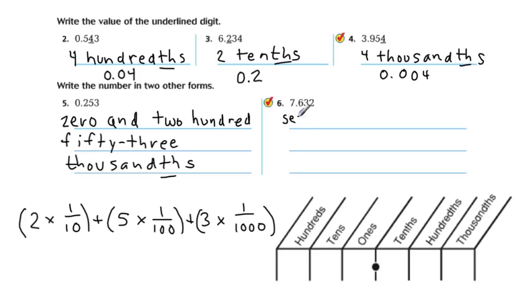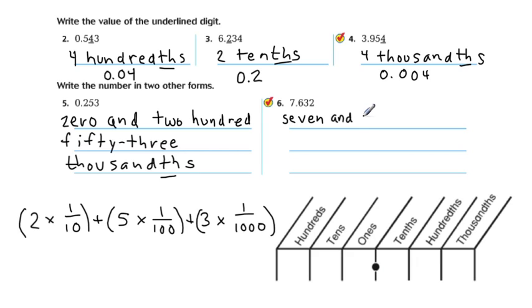Then the word 'and,' because that's what the decimal says. And then it's 632 thousandths, because the number ends in the thousandths place.